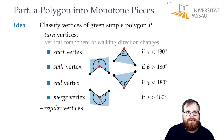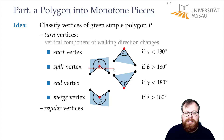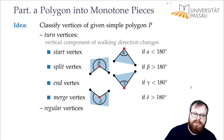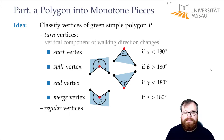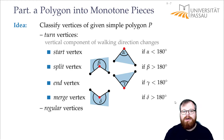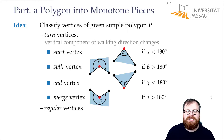Whenever we have a split vertex, our polygon is not y-monotone, because this line here does not give us a connected intersection. And the same with the merge vertex. On the other hand, the start and end vertices should be fine. And the regular vertices — where we go up and after it's up again, or down and down again — they of course are also fine. The only problems we get are the split and merge vertices.